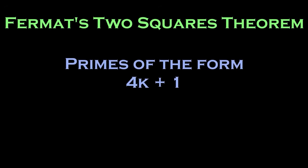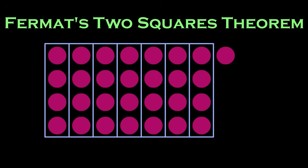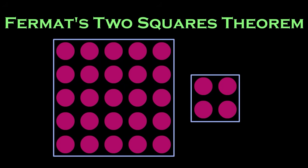The theorem states that primes of the form 4k plus 1, that is, primes that when divided by 4 give 1 as a remainder, can also be represented as the sum of two squares.